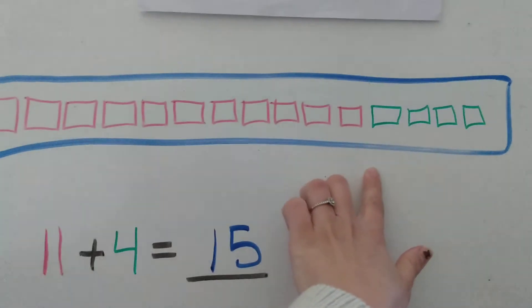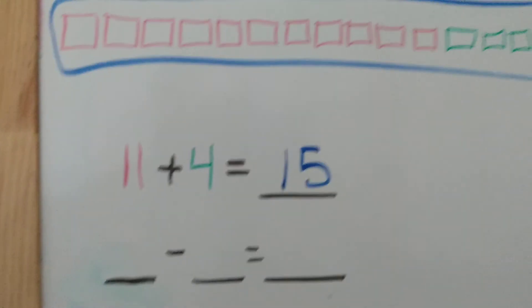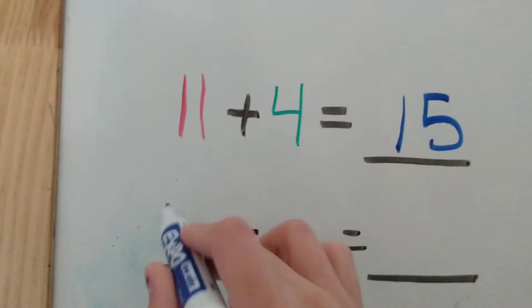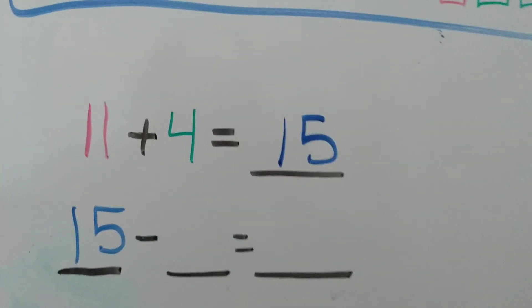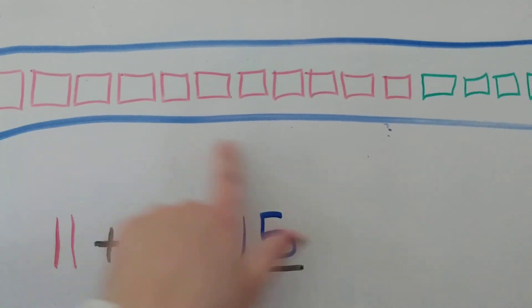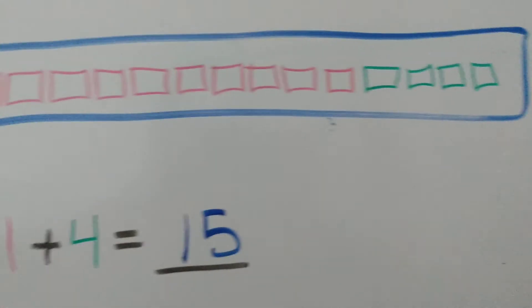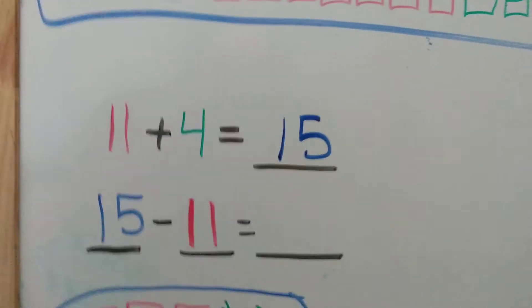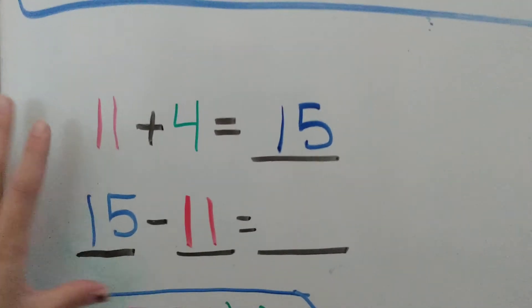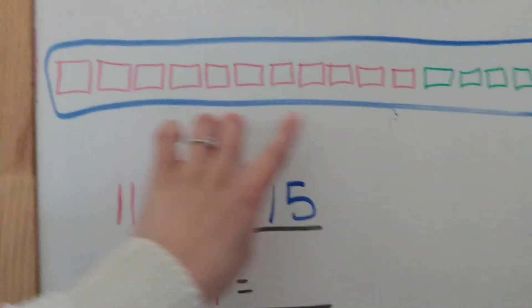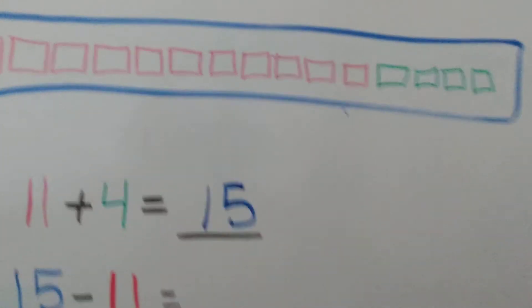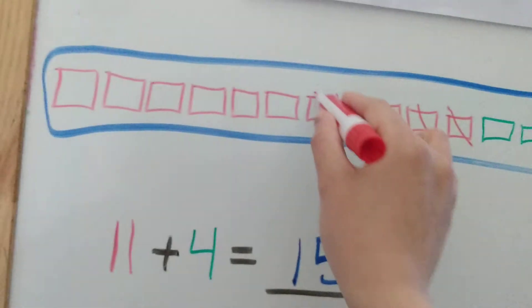Fifteen is our whole number — all together it equals fifteen. What do you think our subtraction problem will start with? Yeah, it's going to start with that whole number. We want to start with the biggest number, so we're going to start our subtraction problem with fifteen. We can either subtract our red, which is eleven, or subtract our green, which is four. I'm going to subtract eleven and see what we get. Remember, we're just using the same numbers — our problems are related. So if we do 15 minus 11, what do you think the answer would be?